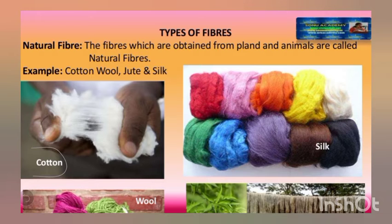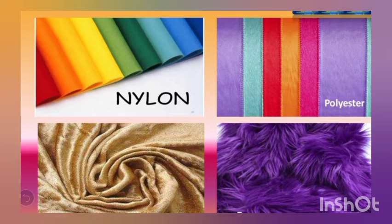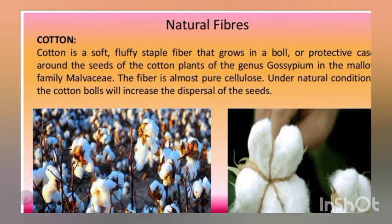In the image you can see that cotton, silk, wool, and jute are all natural fibers. Nylon and polyester, on the other hand, are synthetic fibers — fibers which are made in the laboratory.